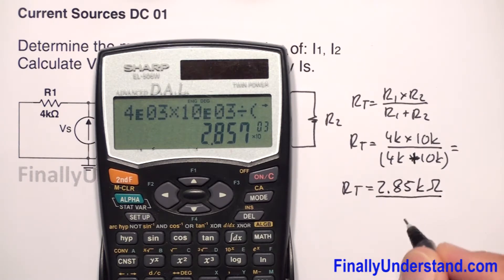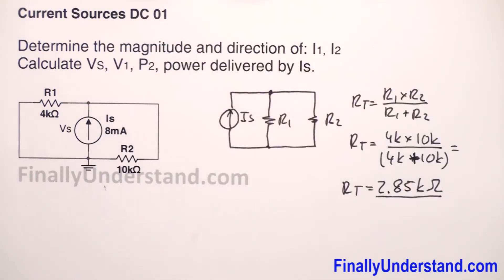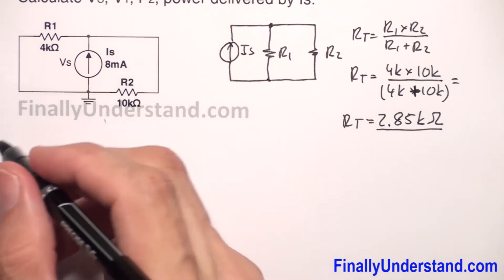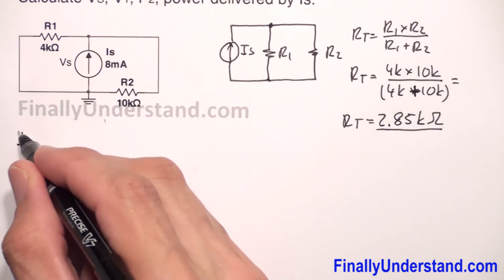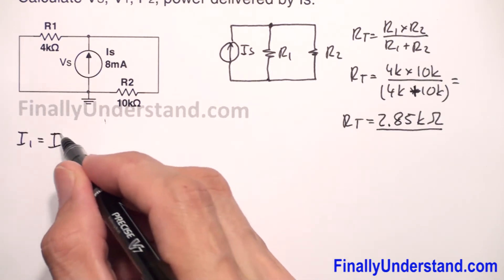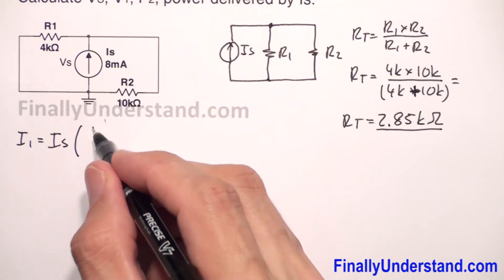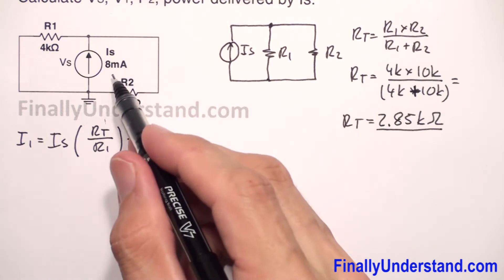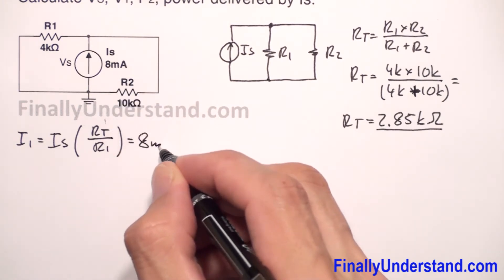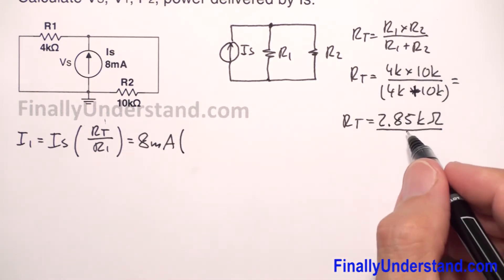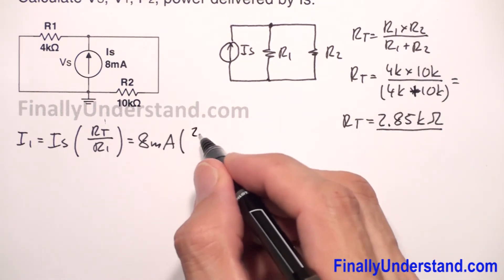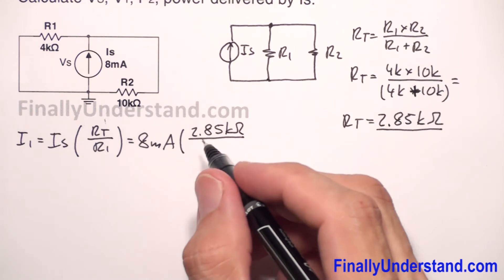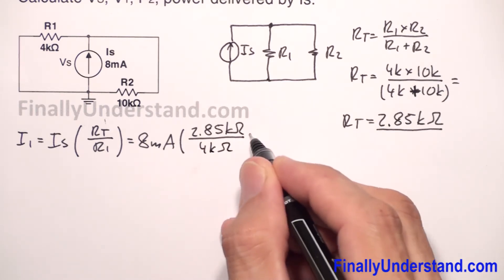This is my total resistance. Next, I am going to use the current divider rule, so I am going to find I1. I1 is equal to I_source times R_total over R1. So my I_source is equal to 8 mA. So I have 8 mA times R_total, which is 2.85 kΩ, divided by R1, which is 4 kΩ.